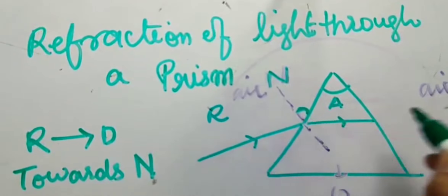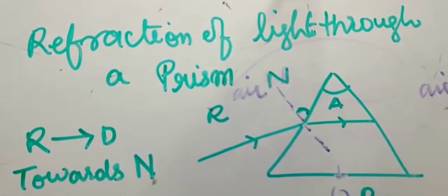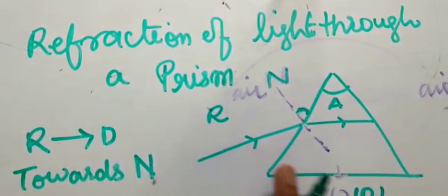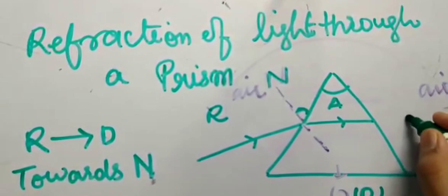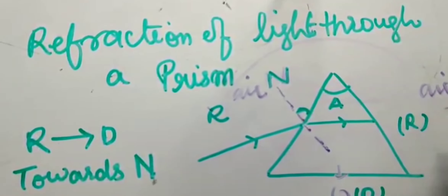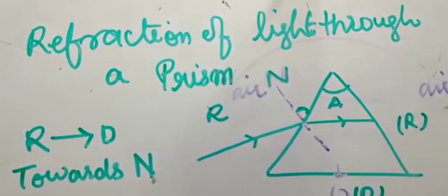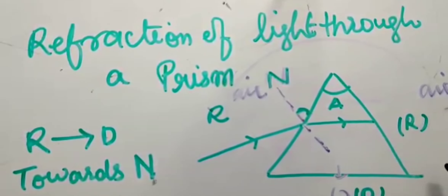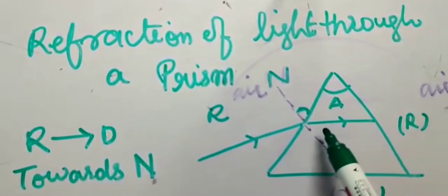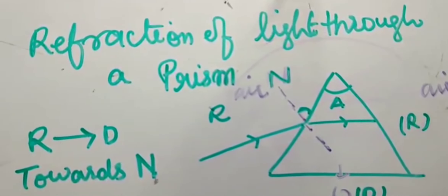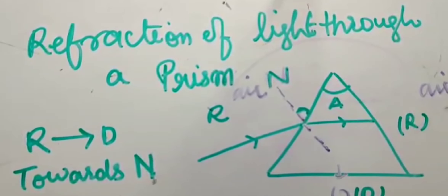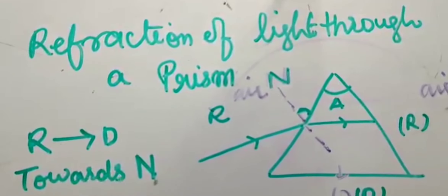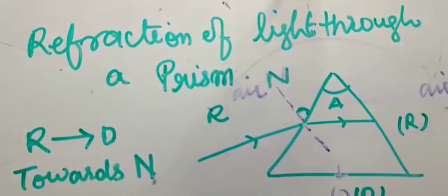From denser to rarer — so we have rarer, rarer on both outer sides and denser in the middle. When light goes from denser to rarer, it will bend away from the normal. So you must note: rarer to denser bends towards normal, denser to rarer bends away from the normal.